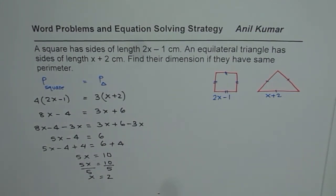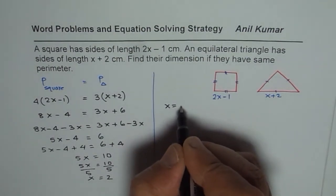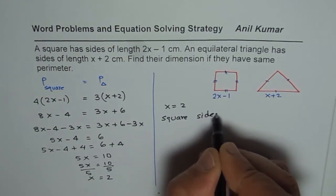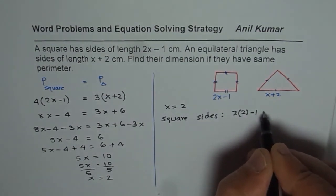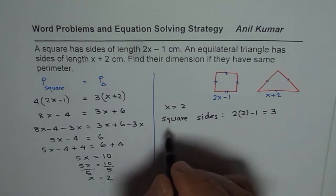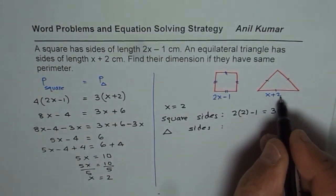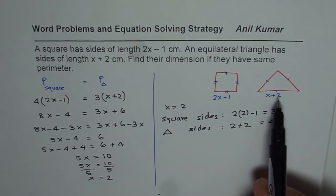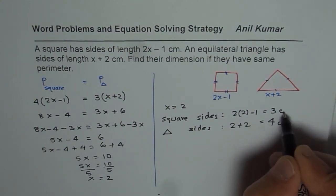So once we know the value of x, we can find each side. So we can now write down the sides. For x equals 2, let us consider square first. Side lengths will be 2 times (substitute x equals 2) minus 1, that is 4 minus 1 is 3. Now for the triangle, the sides will be x+2, that means 2+2, and that is 4. So each side length for triangle is 4 centimeters, and for the square it is 3 centimeters.